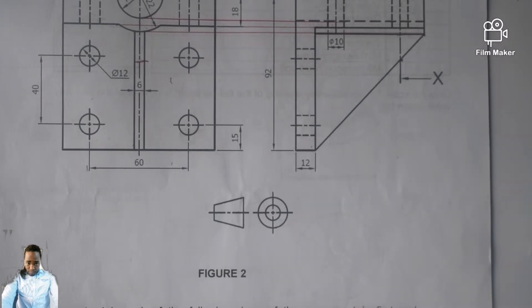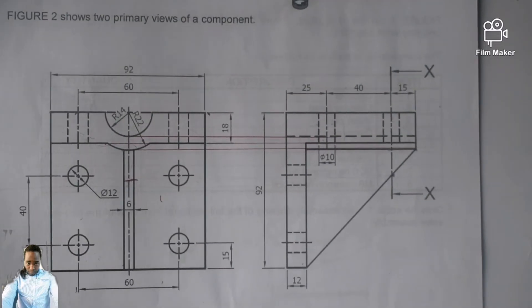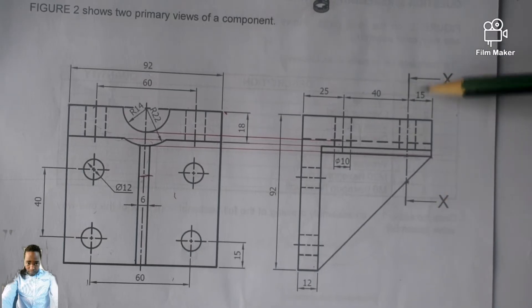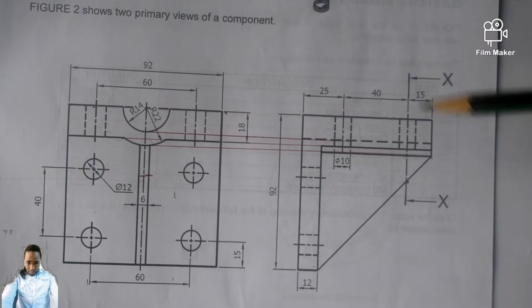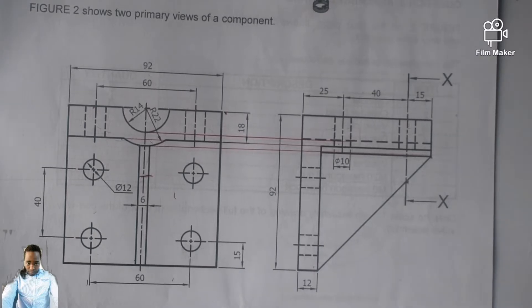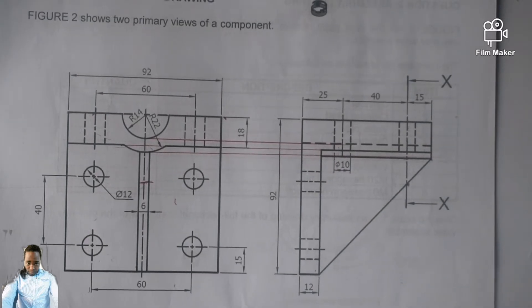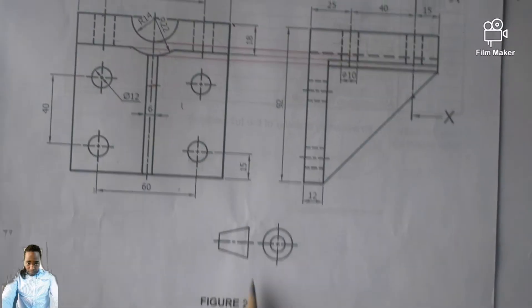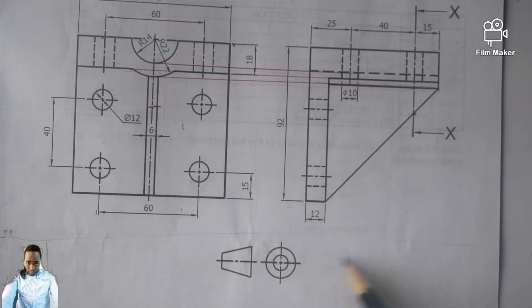Question 2 was given according to first angle orthographic projection. Before you even draw, before you even read the question, analyze those two views that you are given. The XX arrows indicate: draw what is being pointed by the arrow — whatever is beyond your cutting plane arrows, consider it as an off-cut. We are given the front and a left view according to the first angle symbol, so this is your front and this is your left.